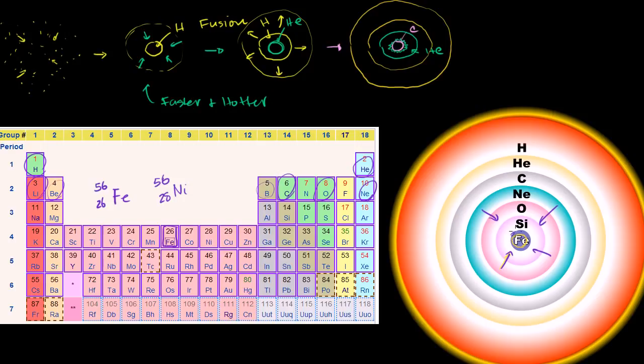And so we keep fusing more and more elements into iron. This iron core becomes more and more massive, more and more dense. It's squeezing in on itself. And so it's not fusing. That is not exothermic anymore.